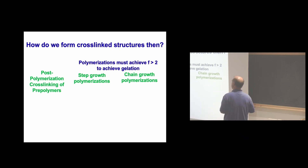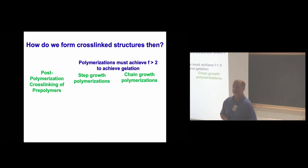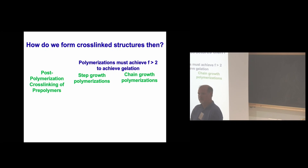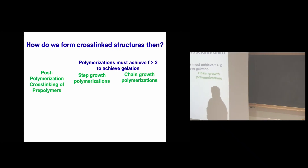One classic way of getting crosslinked structures is post-polymerization crosslinking, done via radiation. Take a linear polymer and expose it to enough radiation — especially gamma radiation — and you'll crosslink that material. You create enough active centers on the backbone that they can recombine, often through radical termination events, and ultimately end up with a crosslinked material from linear polymers.